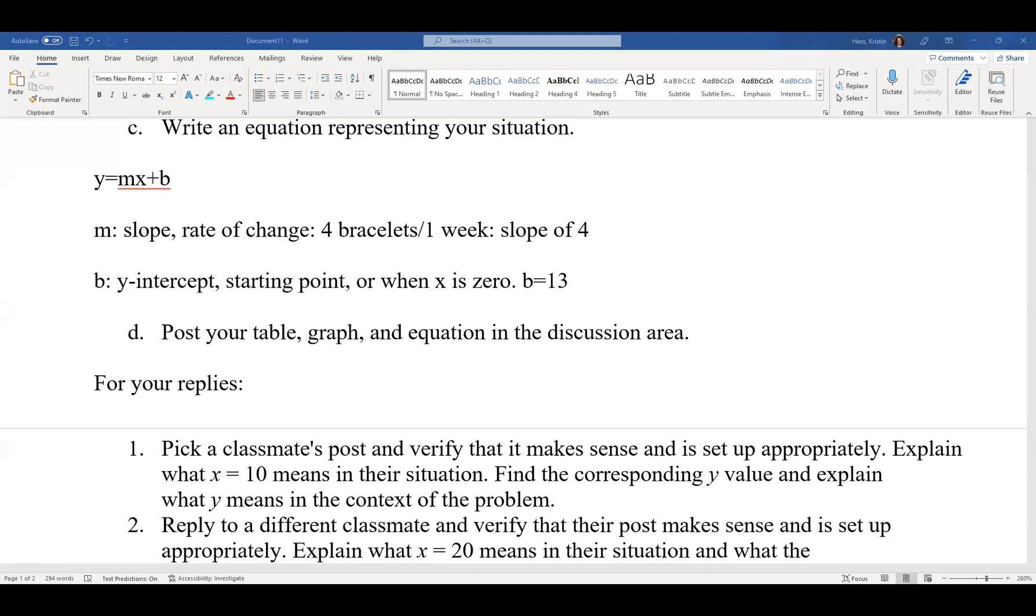Now that we know our m and our b, our slope and our y-intercept, we can write an equation. So we'll have y equals m, which is 4, times x plus b, which is 13.